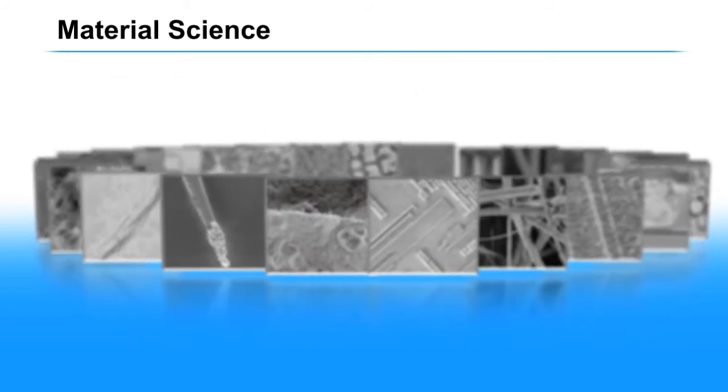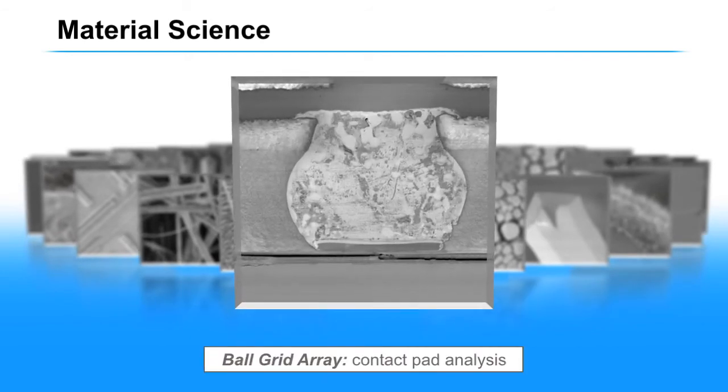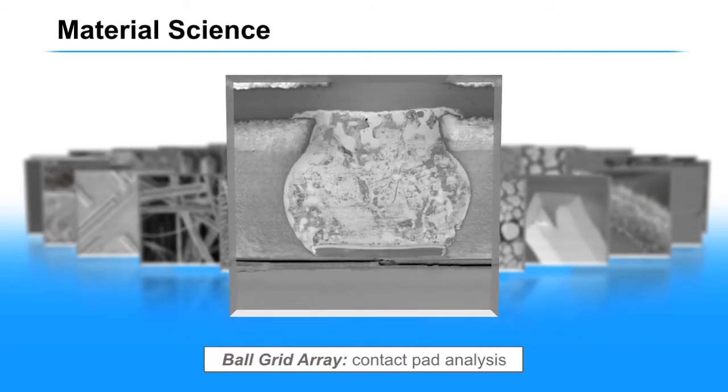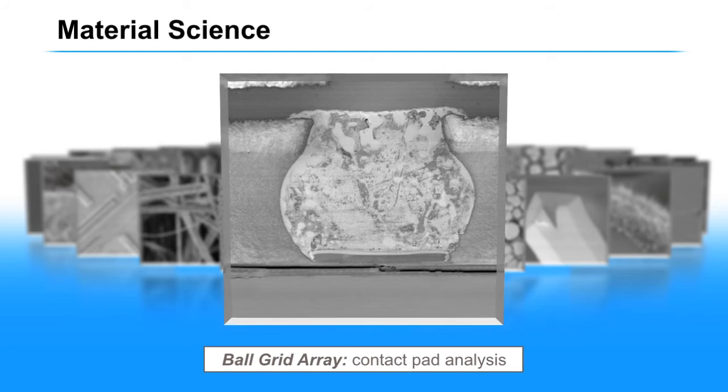We've also been able to use this kind of technique for failure analysis. Here, again, the advantage is because coating is not required. This is an analysis of a ball grid array. There was a failure and a void, and we were able to image it without coating, without additional work on the substrate.